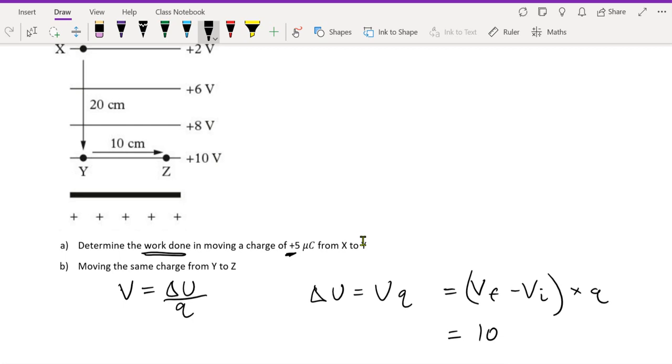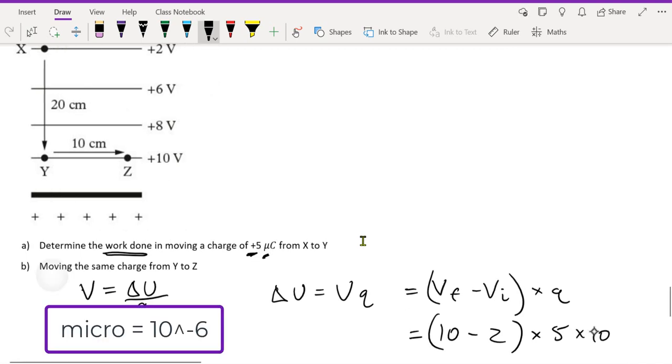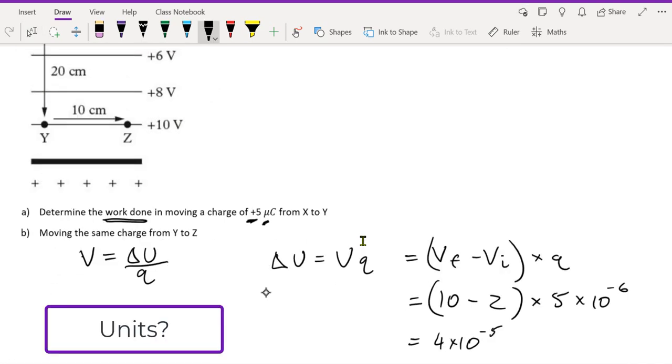Any questions? And what does that little symbol mean? The funny U is? Micro. Very good. Joules.